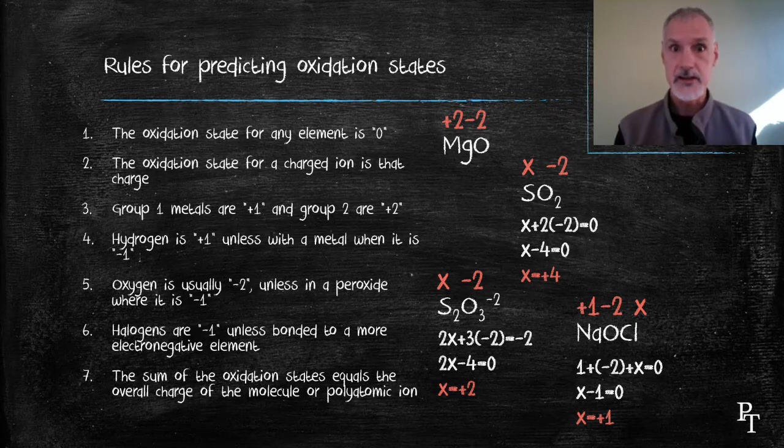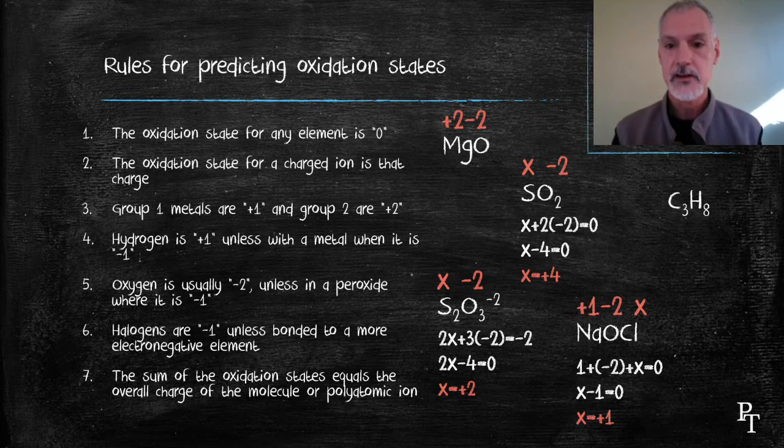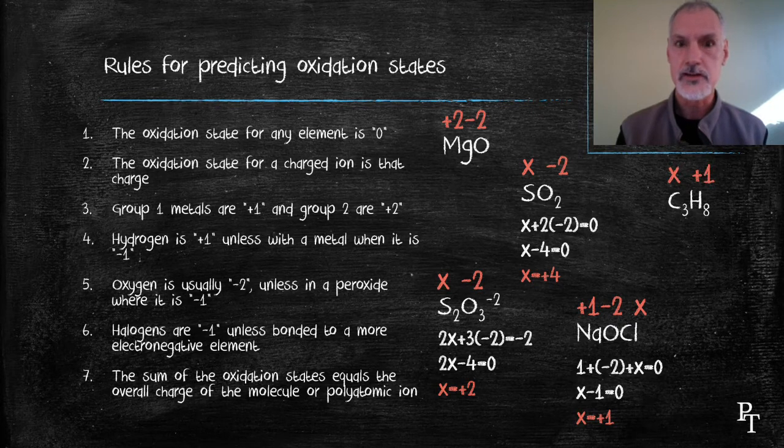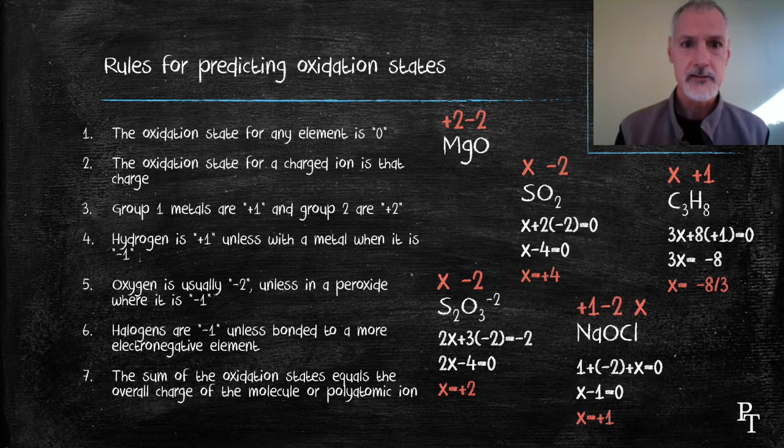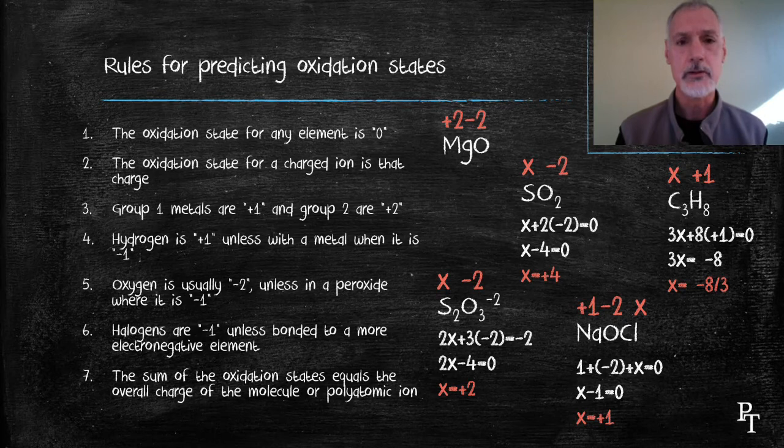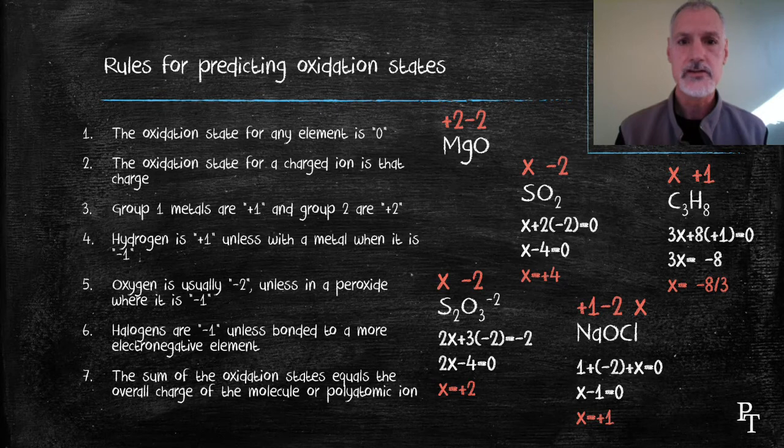I'm going to return to an example I did earlier. The oxidation state of carbon isn't in the rules, but hydrogen is. Hydrogen is usually plus one, and the total charge on this molecule is zero. So I set up the algebraic expression, and when I solve, I get a fraction, negative eight thirds. But if you recall back to this earlier example, the two carbons on the ends of the molecule had an oxidation state of minus three each, and the carbon in the middle had an oxidation state of minus two. Minus eight thirds is but a weighted average of those carbons.